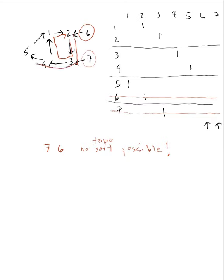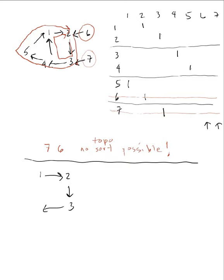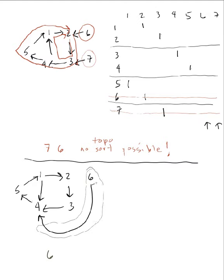Let's do one more example. Every single node here has an in-edge except six, so we start with six and delete it. But four still has an in-edge, one, two, three, and five all have in-edges. No topological sort is possible, confirming this graph contains a cycle and is not a DAG.